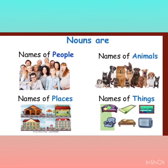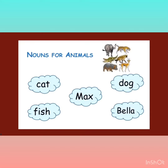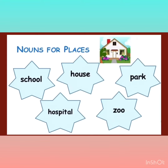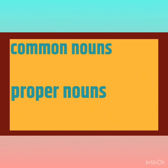Nouns are divided into four categories: person, places, animals, and things. Mom, boy, doctor, teacher — these are people. Cat, fish, Max, dog, Bella — these are animals. School, hospital, house, park, zoo — these are places. Table, pen, bag, book, ball — these are things.